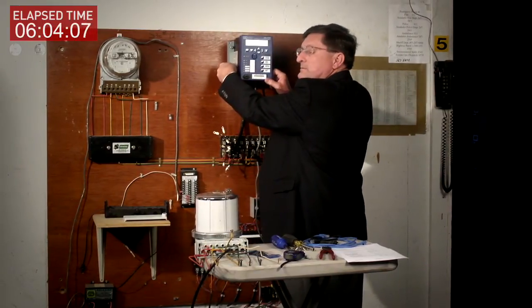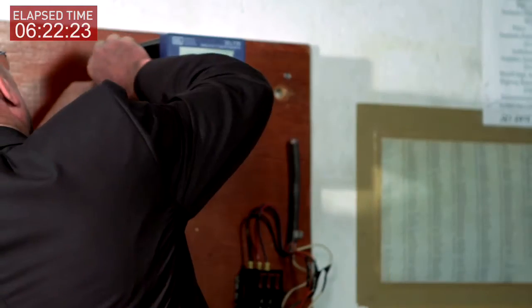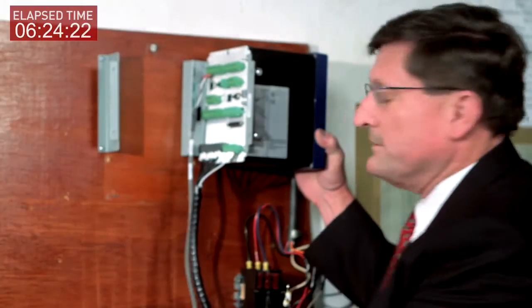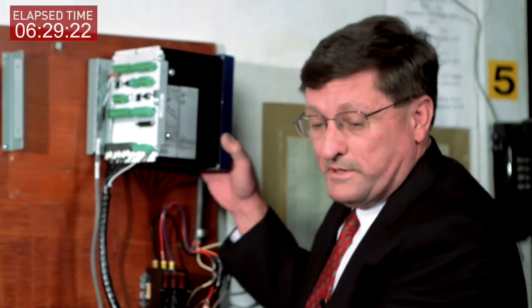We can take our two screws loose on the opposing side and simply swing the 735 out of the way to make our connections on the back of the panel if we need to.